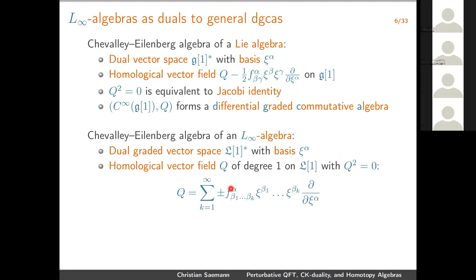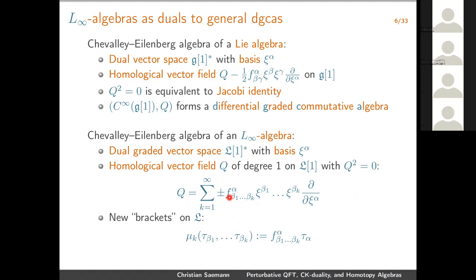Correspondingly, you get the structure constants. The structure constants of an L∞ algebra have essentially two lower indices and one upper index for a Lie algebra, but now we preserve having one output while having arbitrarily many inputs — one, two, three, and so on. Dually to this homological vector field, we now have new brackets with several inputs. Q² = 0 is then equivalent to the so-called homotopy Jacobi identity on these new higher brackets.